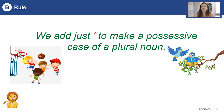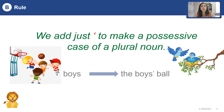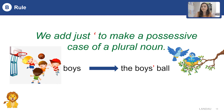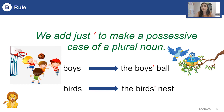Now, let's talk about plural nouns. We add just apostrophe to make a possessive case of a plural noun. For example, these are boys and they have a ball — so this is the boys' ball. Look at these birds — they have a nest, so this is the birds' nest.